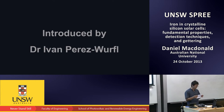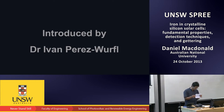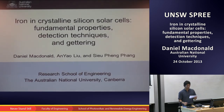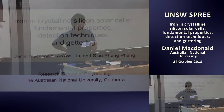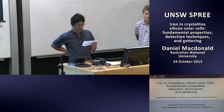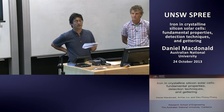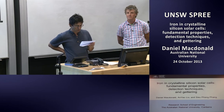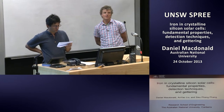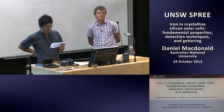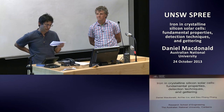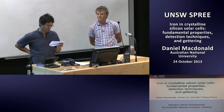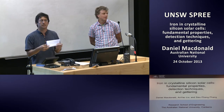I would like to introduce Associate Professor Daniel McDonnell. He got his PhD from the Australian National University in Canberra in 2001. Since then he has worked as a research fellow at the ANU and as a research scientist at the Energy Research Center in the Netherlands. Currently he's an Australian Research Council fellow in the Research School of Engineering at ANU, where his research is focused on defects and impurities in crystalline silicon solar cells, solar-grade silicon and n-type silicon solar cells.